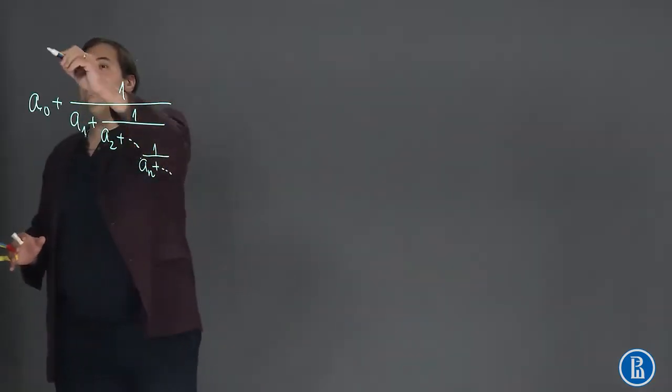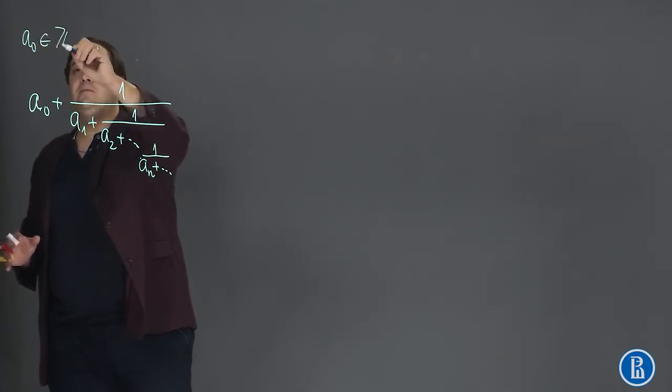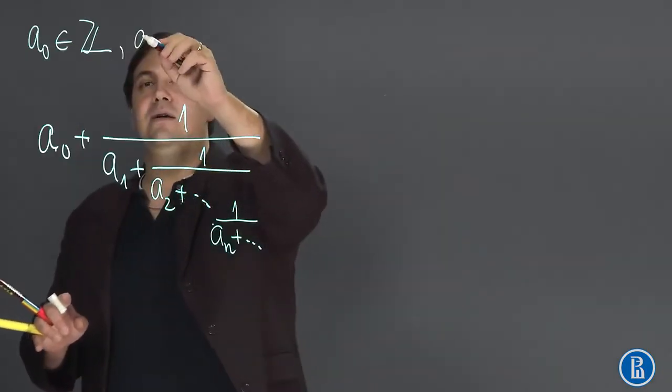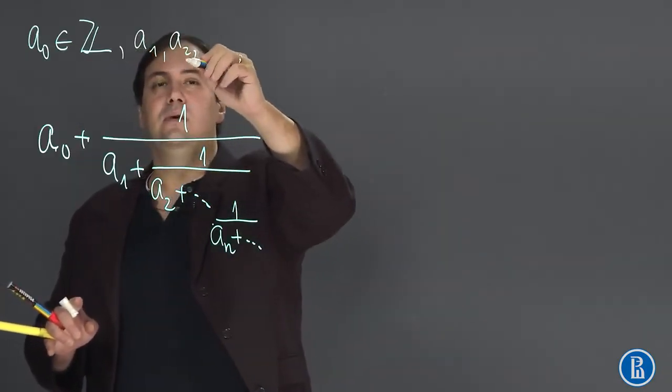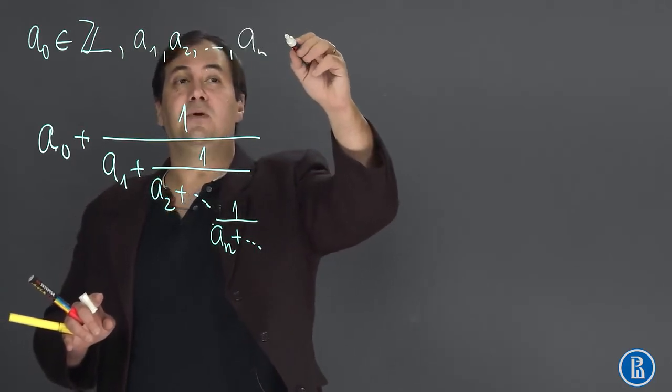Here a0 is an arbitrary integer and all of the other a's, a1, a2, a3 and so on, a_n, are positive integers.